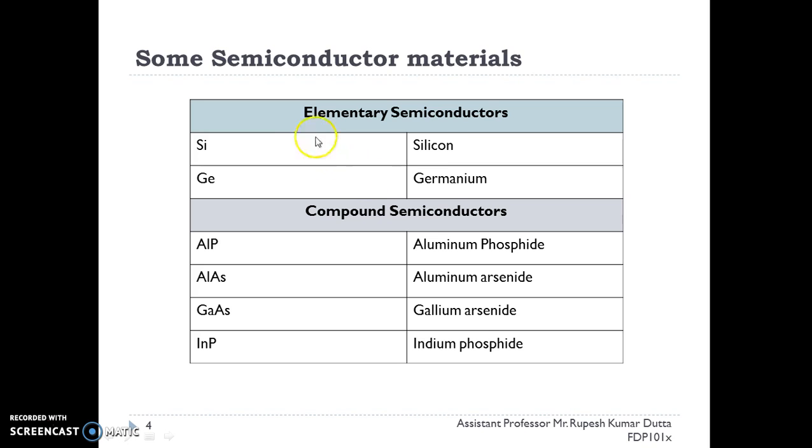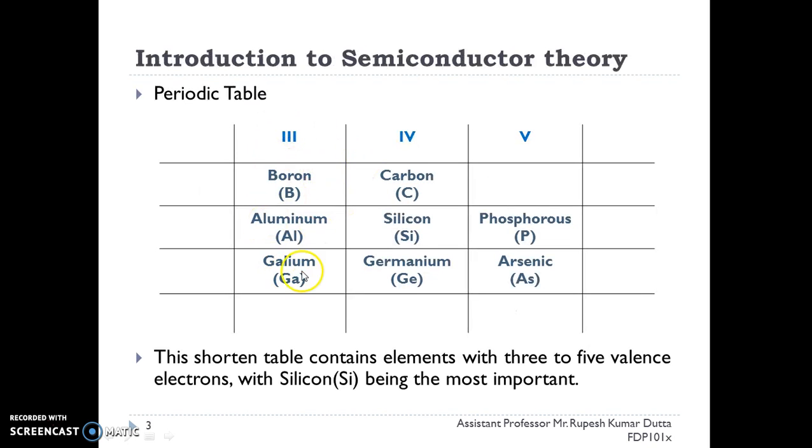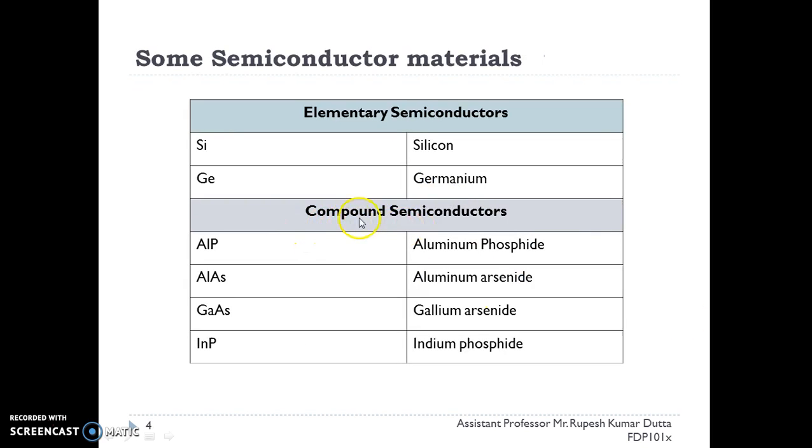These are also known as elementary semiconductors. If we combine group 3 and group 5 elements, then we will get compound semiconductors. These are also widely used for certain applications like gallium arsenide and aluminum phosphide.